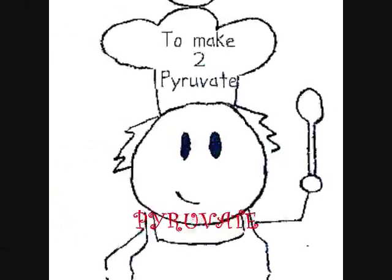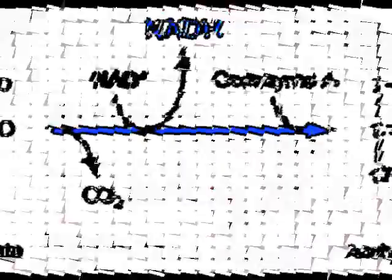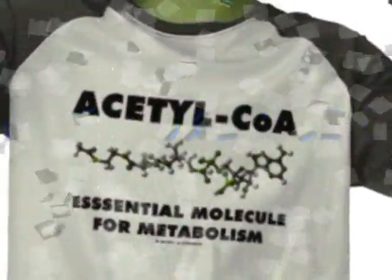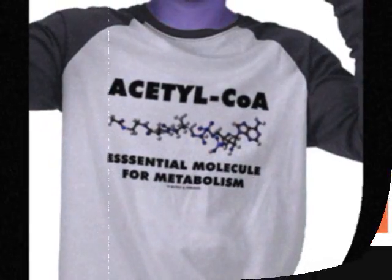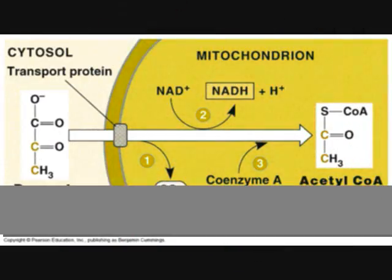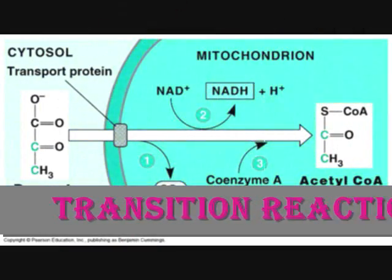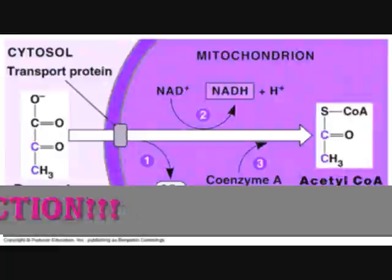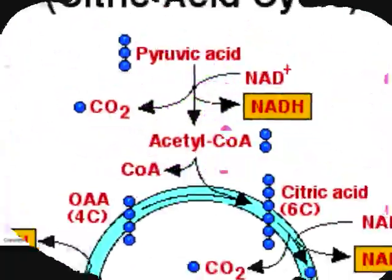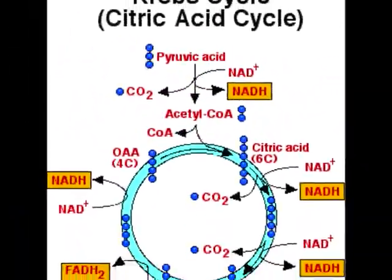We use ATP to make 2-pyruvate, and then we turn 2-pyruvate into acetyl-CoA. For transition reaction, transition reaction, transition reaction — preparing for Krebs cycle.